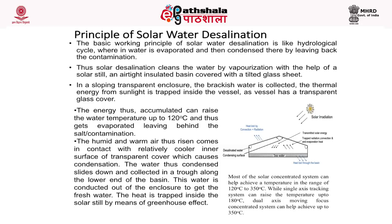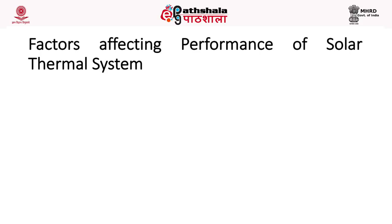Most concentrated solar systems can achieve temperatures in the range of 120°C to 350°C. Single-axis tracking systems can raise the temperature up to 180°C, while dual-axis moving focus concentrated systems can help achieve up to 350°C.